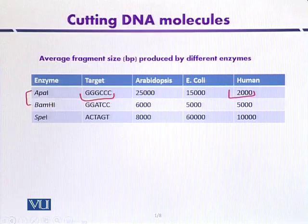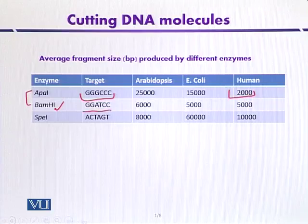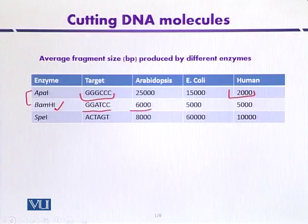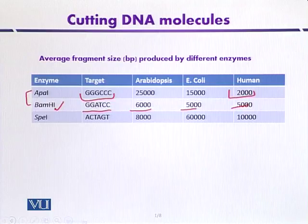Another enzyme, BIMH1, can also recognize a six base pair target sequence. But in the case of Arabidopsis, it can be repeated after every 6,000 base pairs. In the case of E. coli it is 5,000 base pairs, and in the case of human it is also 5,000 base pairs, and so on for other microorganisms.